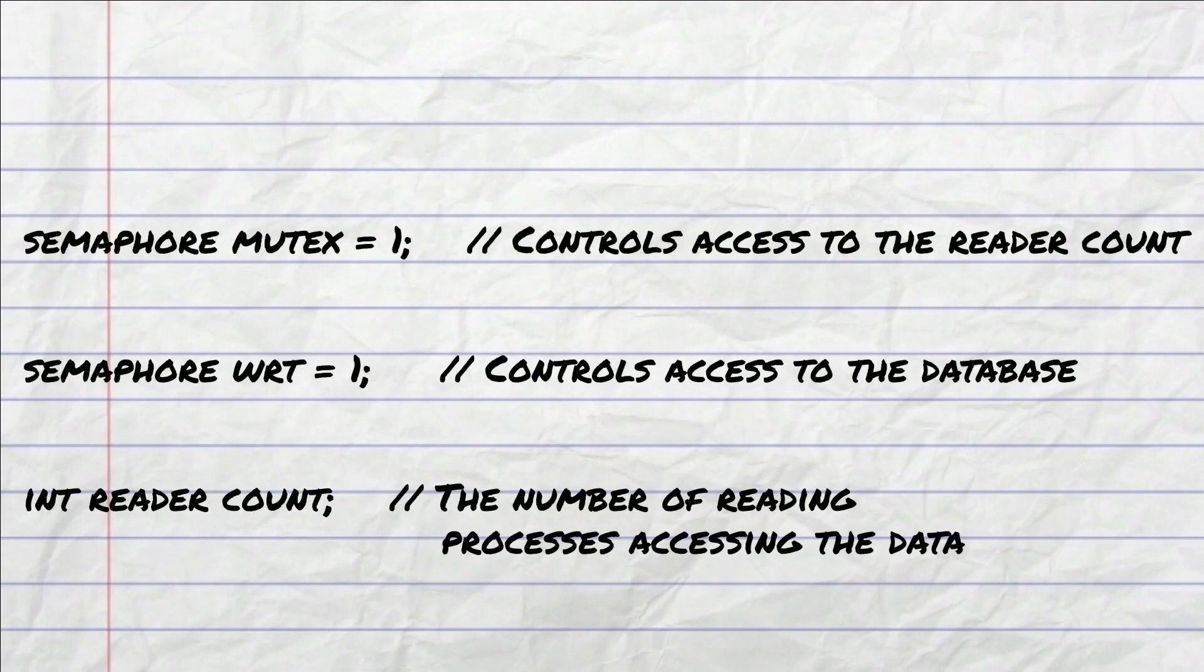it controls access to the reader count. Semaphore Wrt controls access to the database. And reader count is the number of reading processes processing the data.